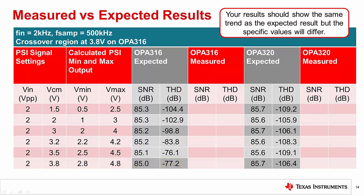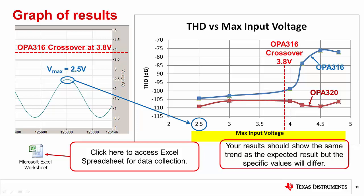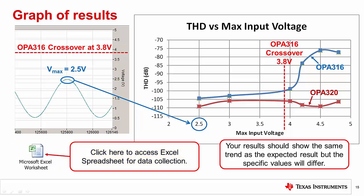The point isn't to focus on the exact value, but to notice that THD dramatically decreases once you enter the crossover region. A common error is to forget to adjust the sampling rate to 500 kS/s. This is needed as the OPA316 is not fast enough for the ADS8860 full sampling rate of 1 MS/s. Graphing the results shows that the OPA320 THD is relatively unaffected by the maximum input signal amplitude, but the OPA316 performance degrades when the maximum signal passes the crossover voltage of 3.8 volts. The attached Excel spreadsheet can be accessed by clicking on the icon in the PowerPoint presentation. This spreadsheet contains the table from the last slide and the graph shown here. When collecting data for the OPA320, use the coupon card labeled OPA320GoodFilter1. All other jumper settings and connections are the same for both amplifiers.